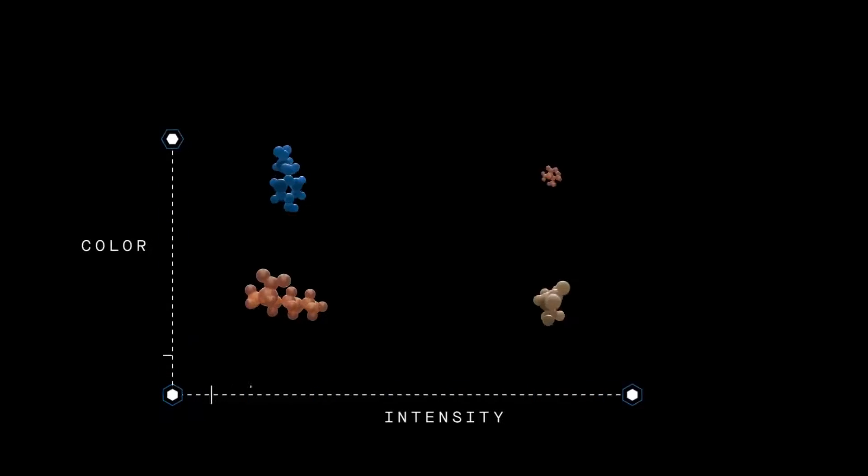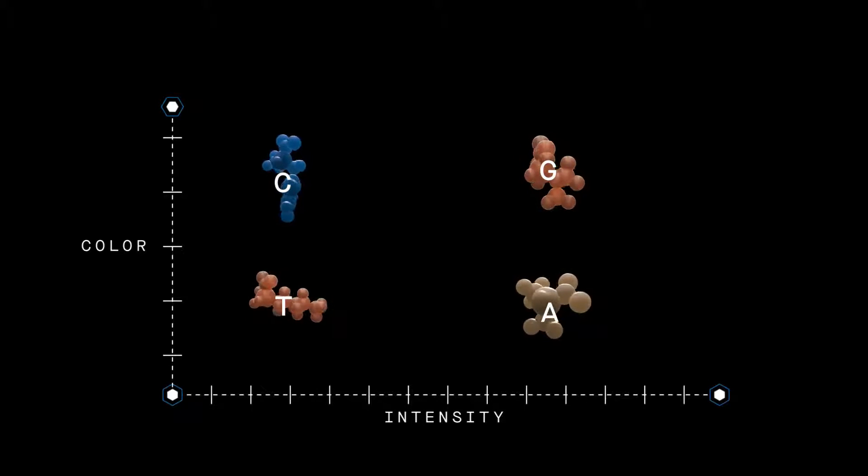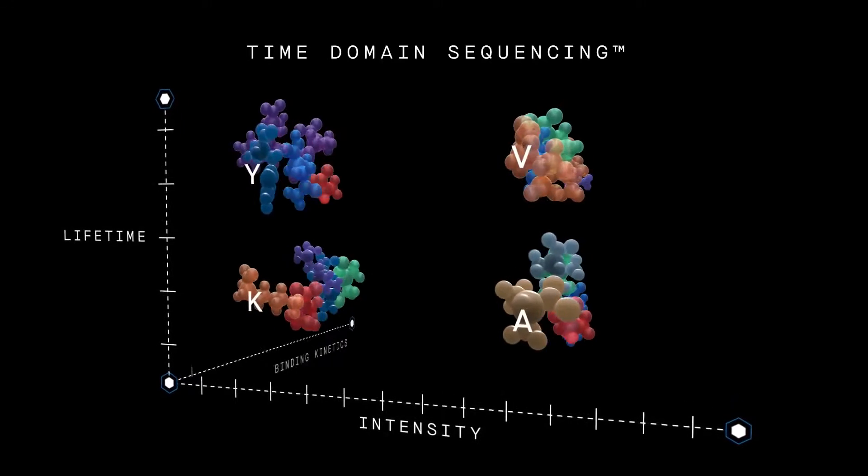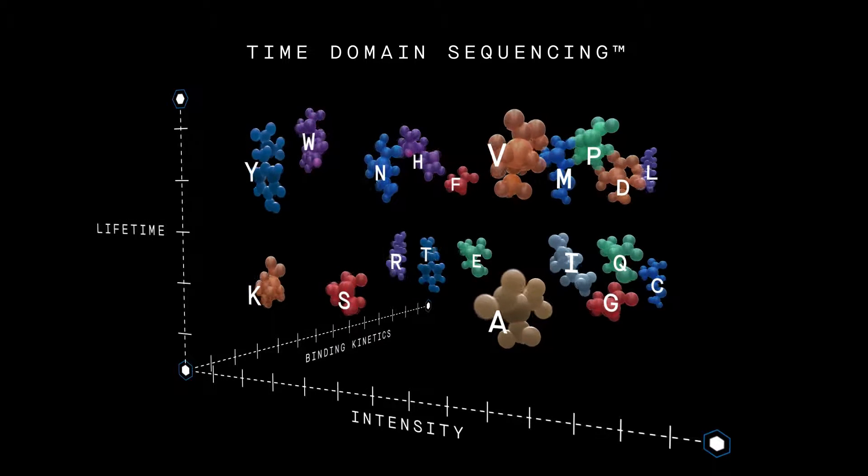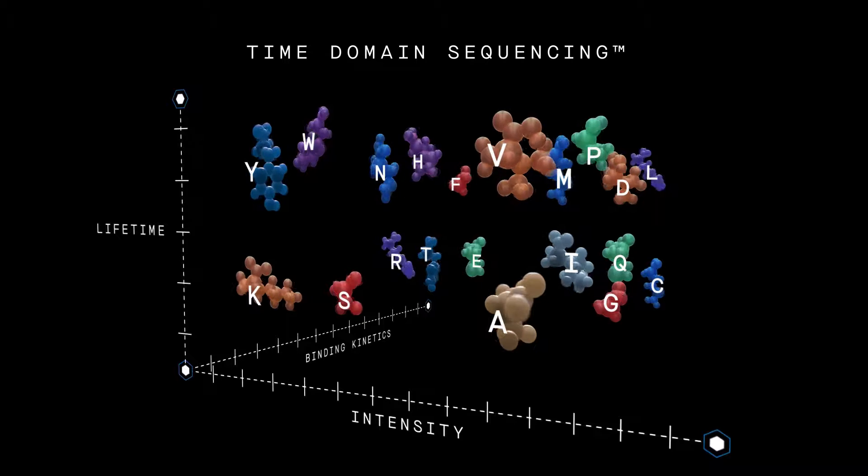While traditional sequencing utilizes color and intensity to differentiate four DNA bases, this is inadequate for the 20 amino acids in proteins. Quantum SI combines three axes of data to address the expanded alphabet: lifetime and intensity of the fluorescence molecule, along with the binding kinetics of the recognizer.